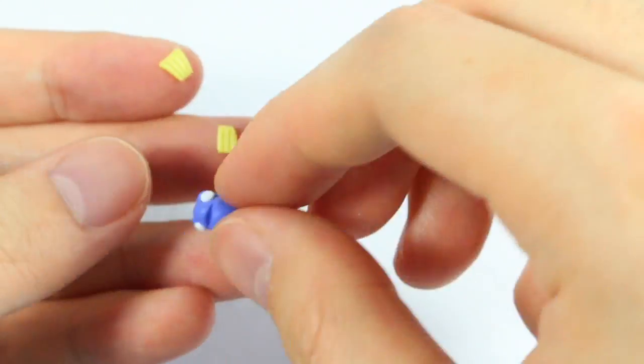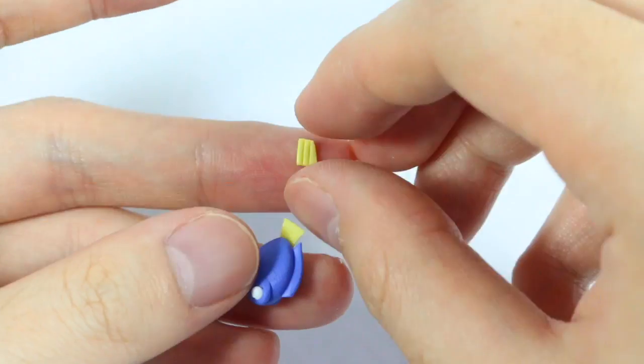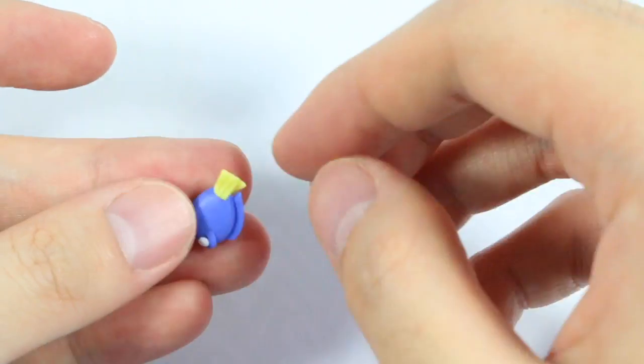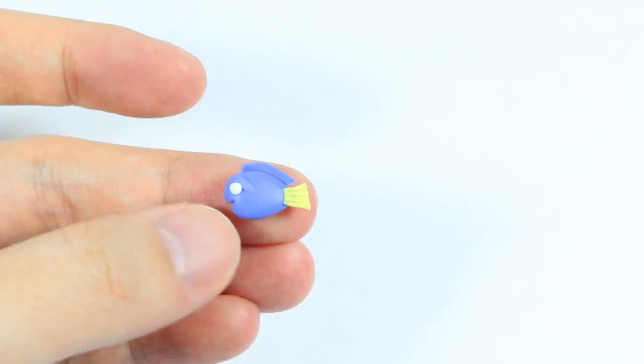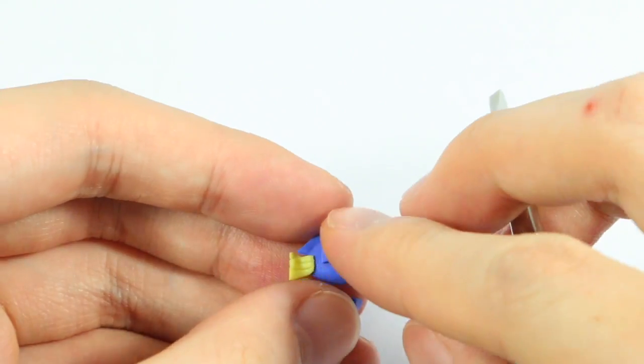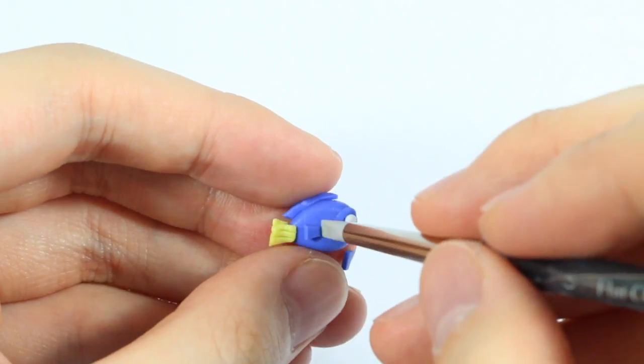So for the tail fin I'm making two yellow trapezoids and I put in some light indents and I'm wrapping it at the end of Dory. And then for the side fins I'm just blending on two little blue trapezoids.